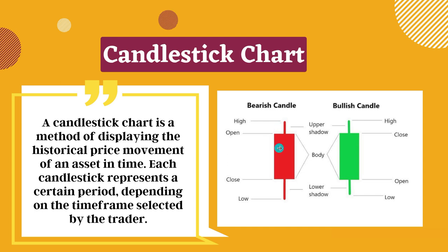The color reveals the direction of market movement — a green body indicates a price increase while a red body shows a price decrease.